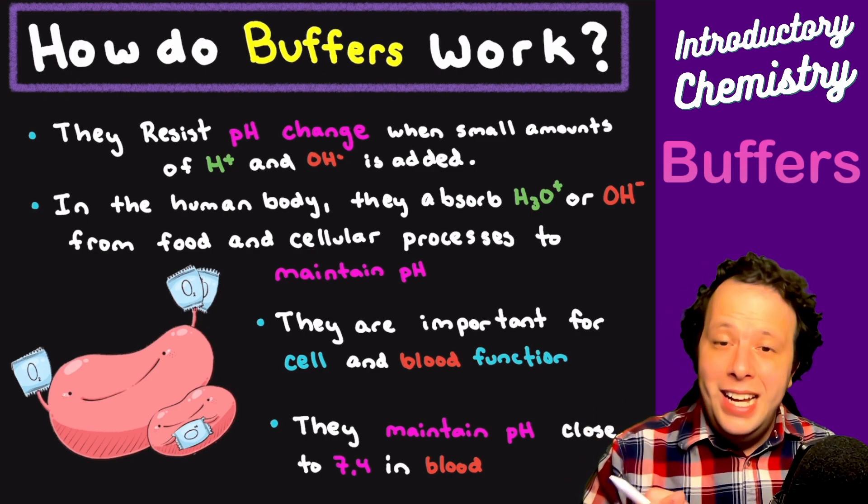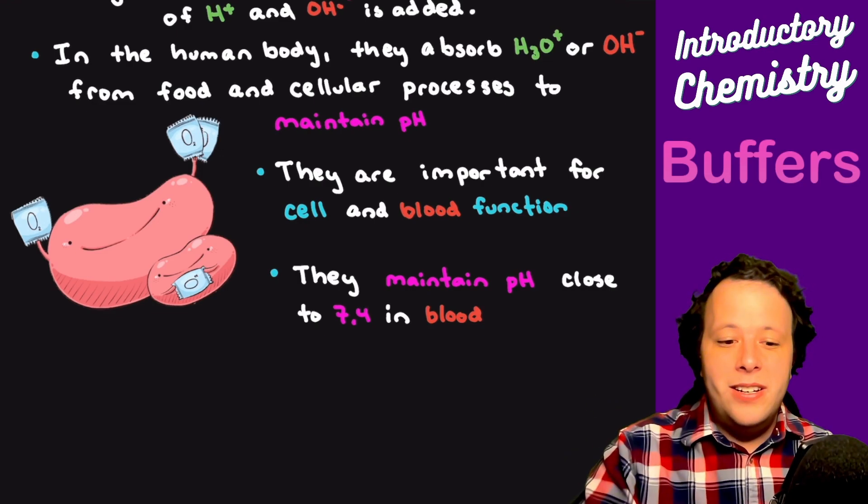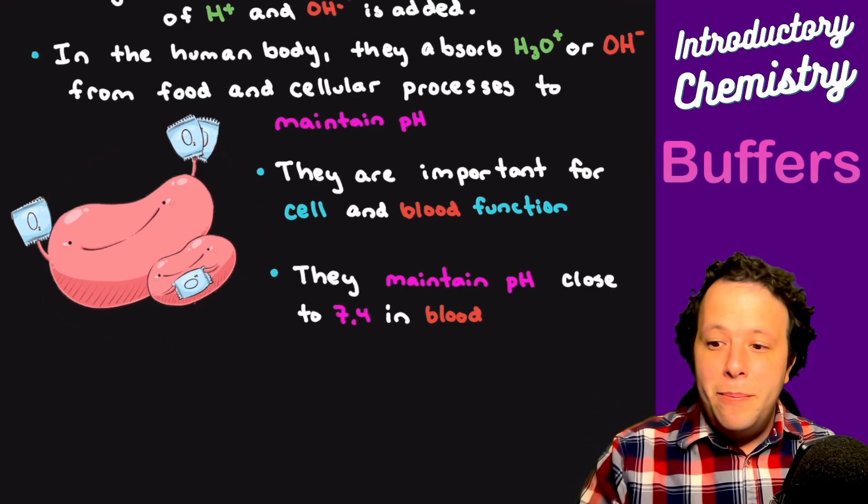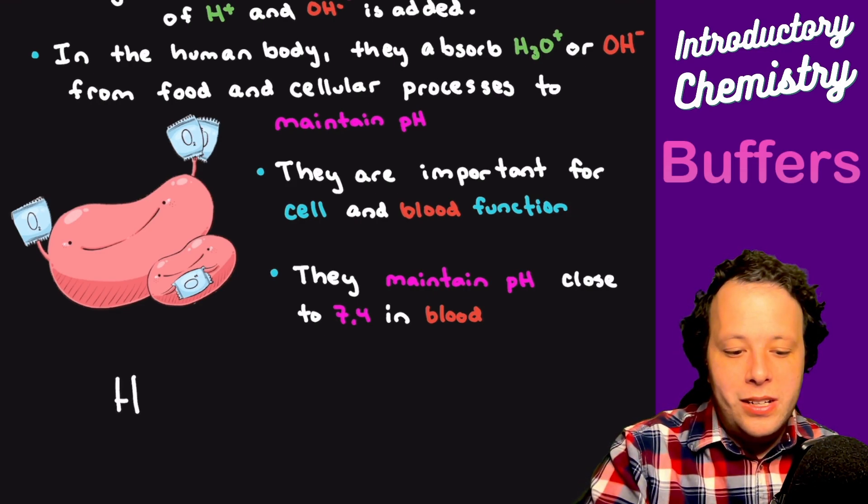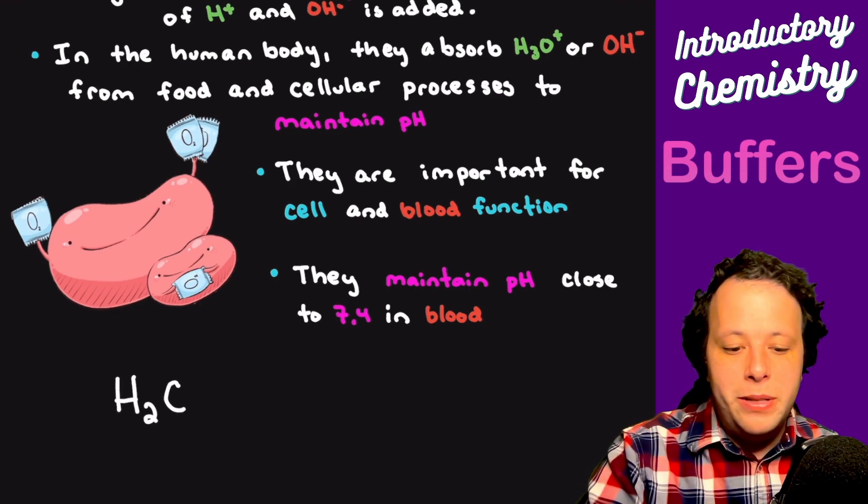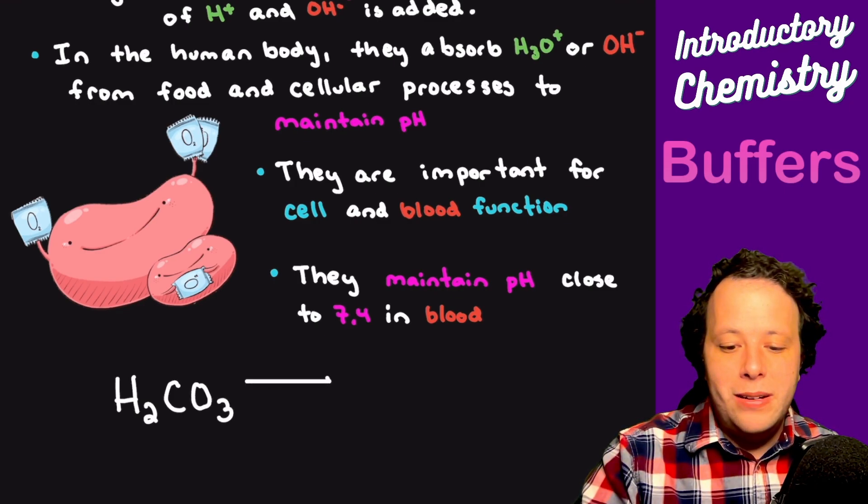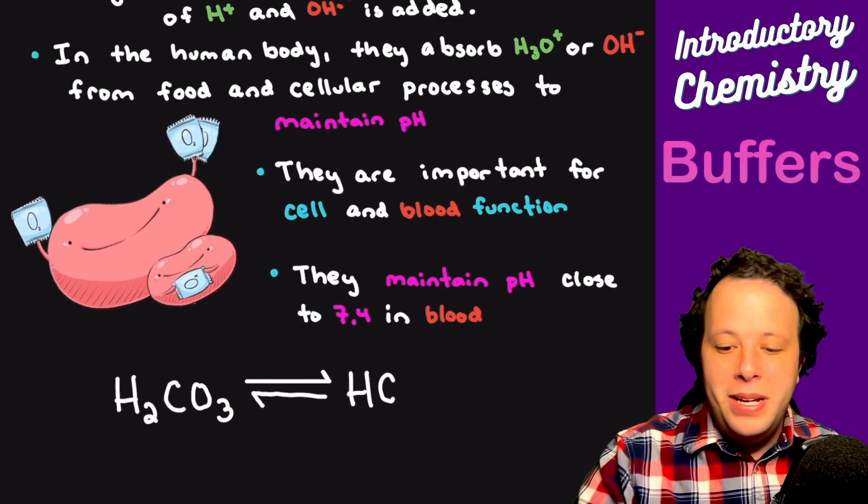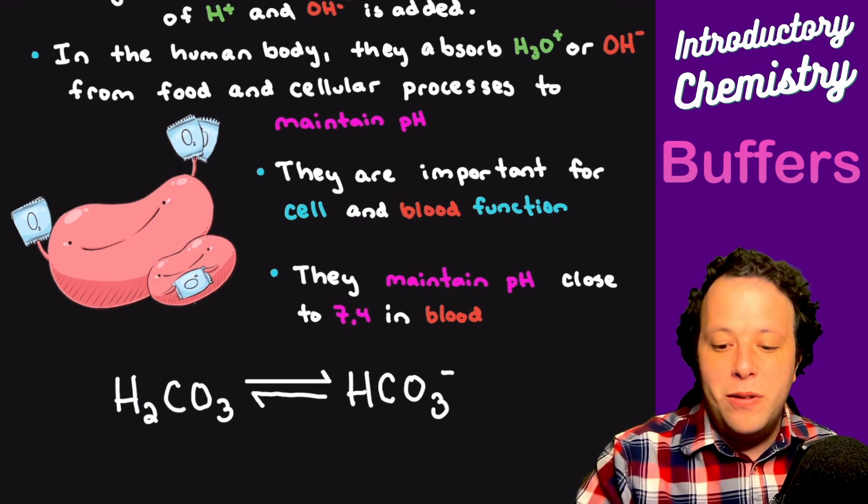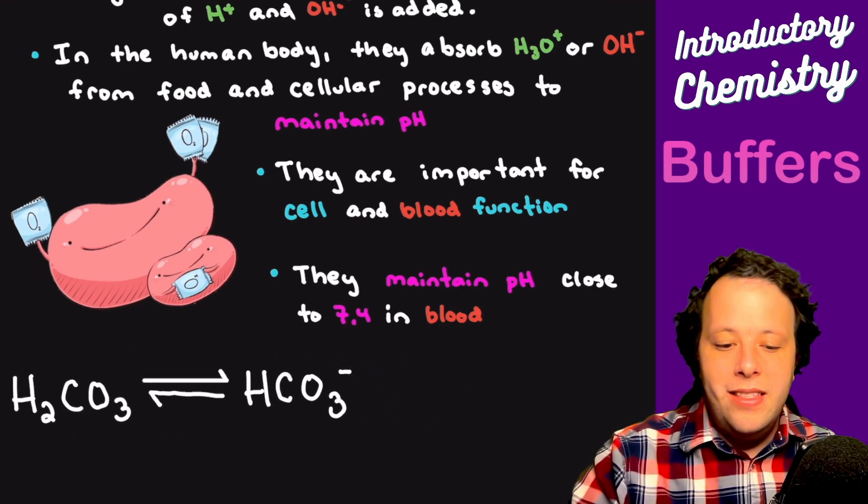Whenever you have a buffer, it's very important to cell and blood function. It maintains the pH. One big example is your blood with all of your blood cells is a giant buffer system. If I have carbonic acid, which is in your blood, and we combine that with its conjugate base, it would help maintain the system. Its conjugate base, which differs by one single proton, will help maintain that pH.